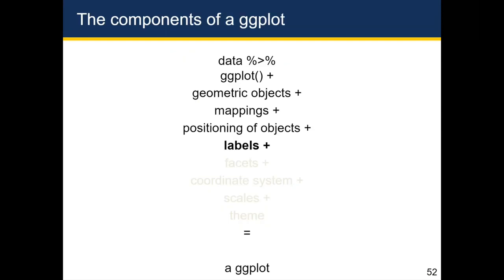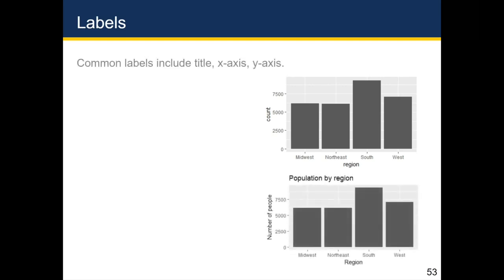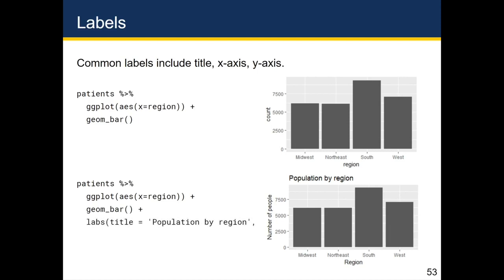Once we've got all those things done, what we might want to then do is add some labels to clarify what the title of the plot is and what some of the x and y axes are. So remember to create this simplistic chart on the top right, we start with patients, we make a ggplot and map region to the x-axis, and then we add a geom bar and we're done. To make this chart at the bottom right, which has a title and has some nicer looking labels for the x and y-axis, we still do all the same things. And we add this thing called labs, which stands for labels. And here we can specify the title, we can specify what we want on the x-axis, and what we want on the y-axis.